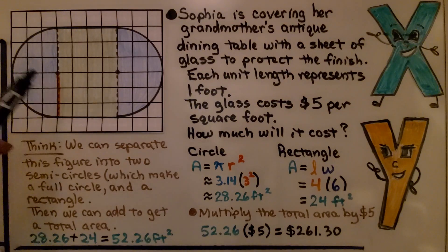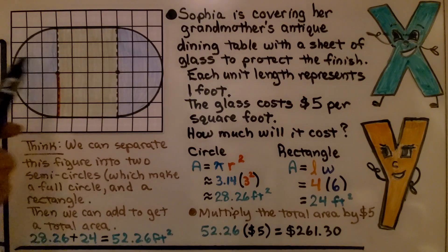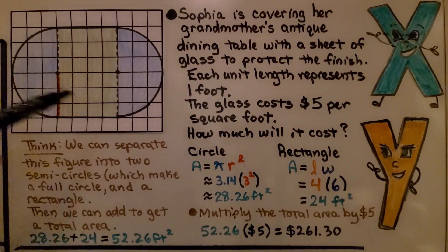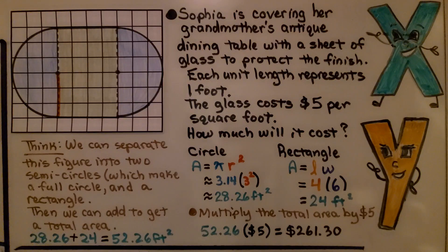Now take a look at this shape. It's like a stretched out circle, isn't it? Sophia is covering her grandmother's antique dining table with a sheet of glass to protect the finish. Each unit length represents one foot. And the glass costs $5 per square foot. How much will it cost? So we think we can separate this figure into two semicircles, which together make a full circle, and a rectangle. Then we can add to get a total area.